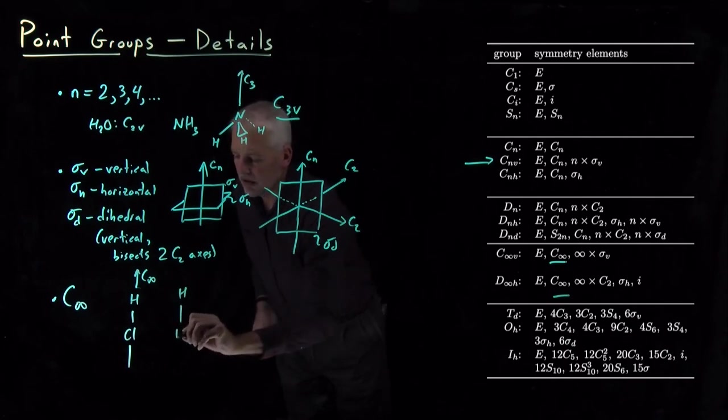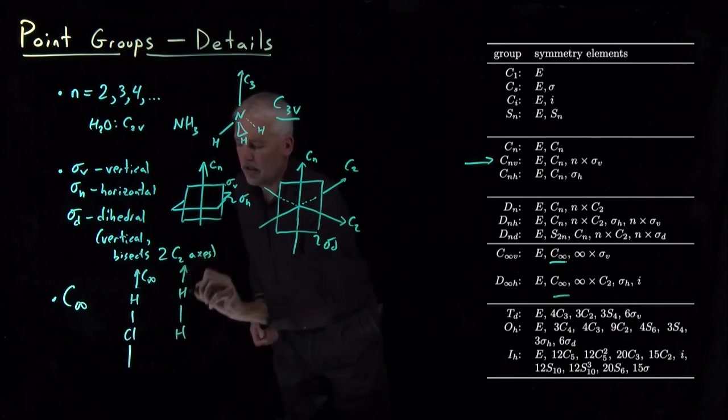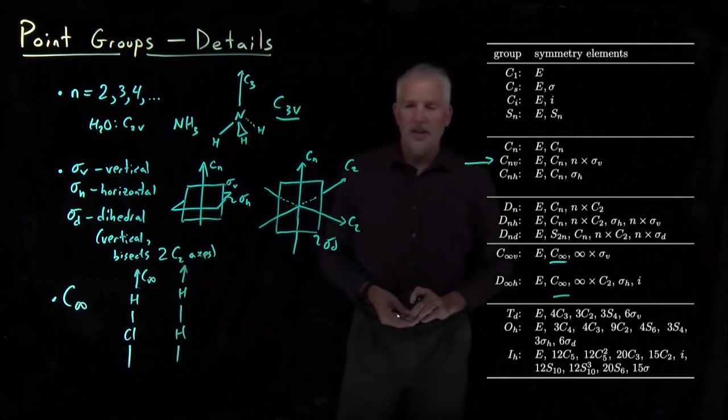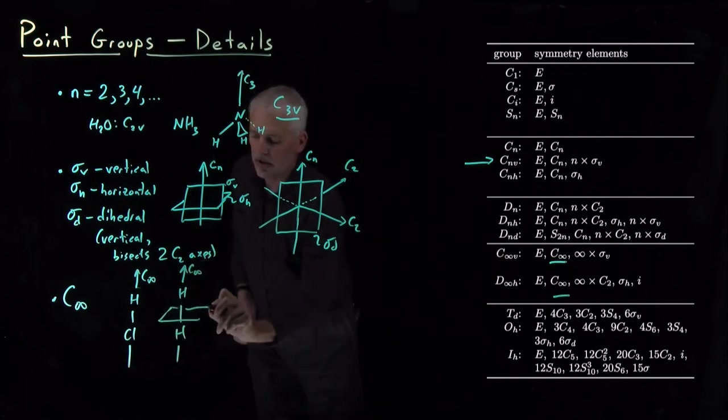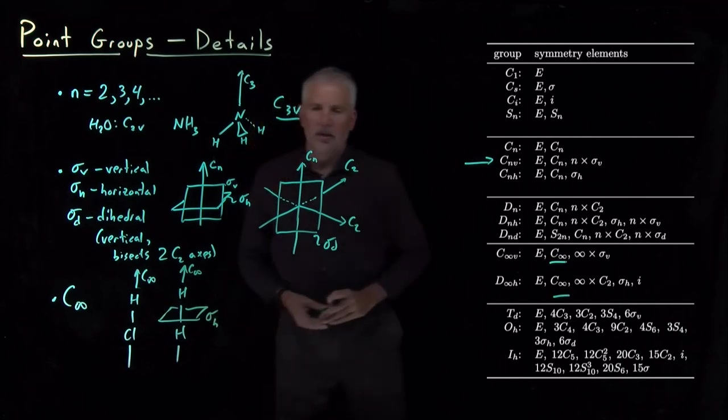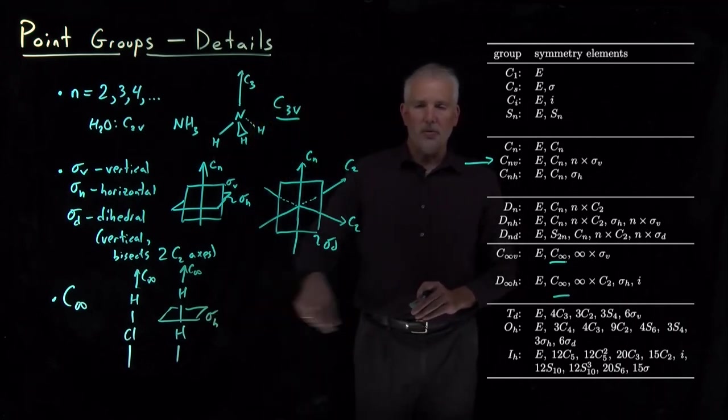Molecules that are symmetric and in addition to the C infinity, so H2 also has a C infinity plane, but it also has some additional features like a horizontal reflection plane.